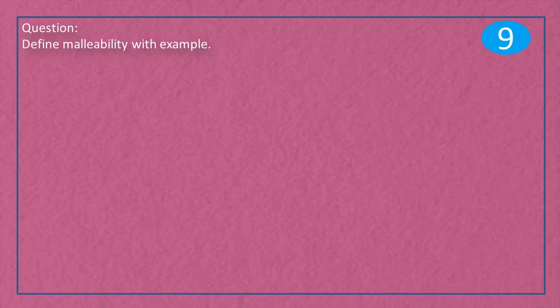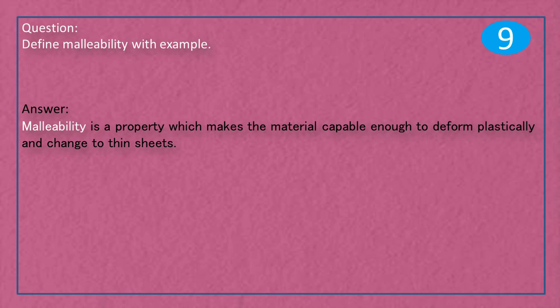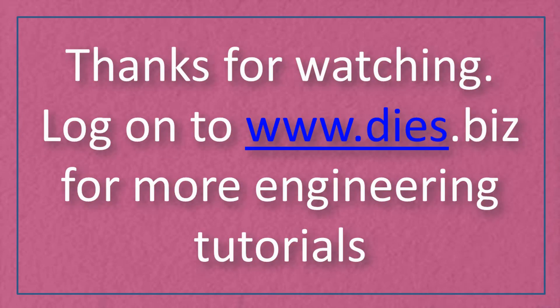Question: Define malleability with example. Answer: Malleability is a property which makes the material capable enough to deform plastically and change to thin sheets.